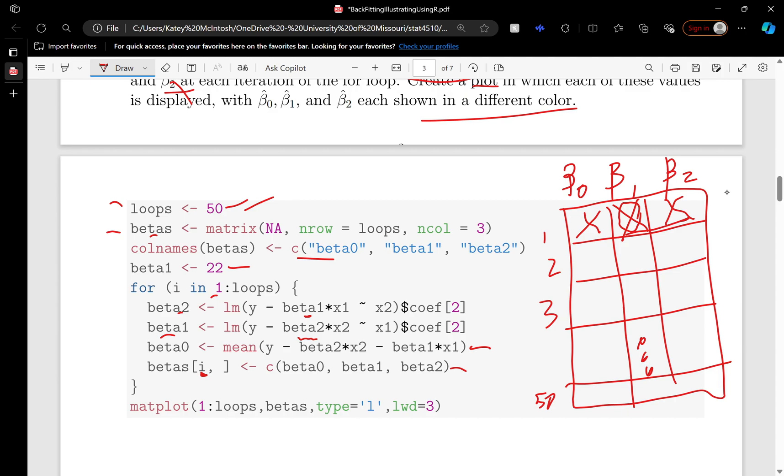Then I store those values in the first row of this matrix. Then it starts the second loop, and what it's doing is essentially taking this estimate and using it as our initial guess in the next iteration. Here it takes that value and estimates beta 2, then takes beta 2 and estimates beta 1, then takes both of those and estimates beta 0. It stores it in the second row of this matrix.